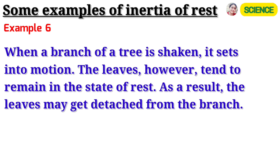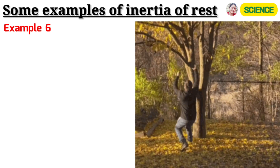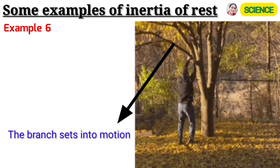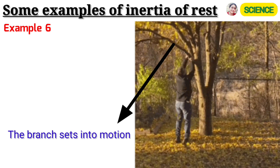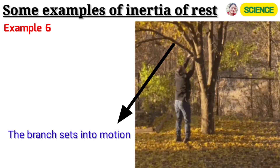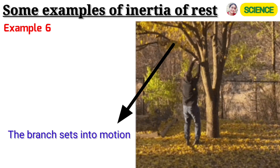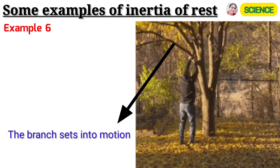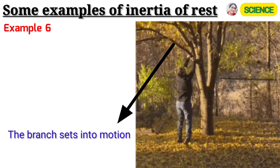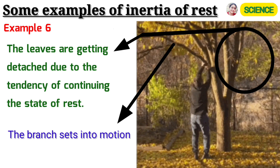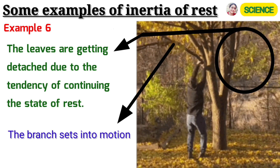Example 6: When a branch of a tree is shaken, it sets into motion. The leaves, however, tend to remain in the state of rest. As a result, the leaves may get detached from the branch.